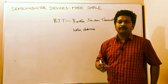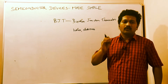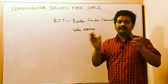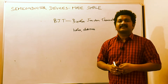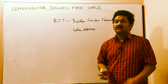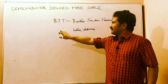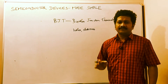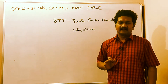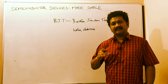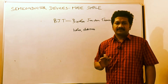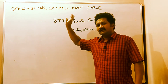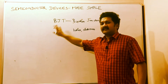Diodes are bipolar because holes and electrons both are involved, where recombination takes place and current is produced. So diodes and BJT are both bipolar devices which conduct current.